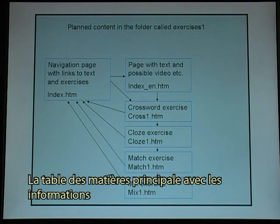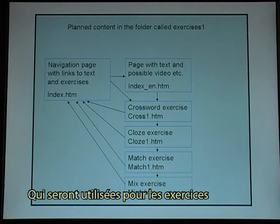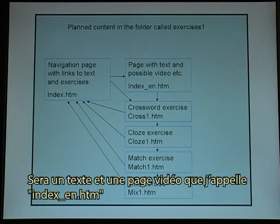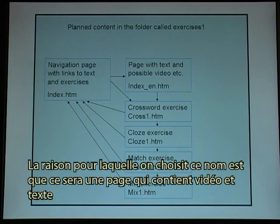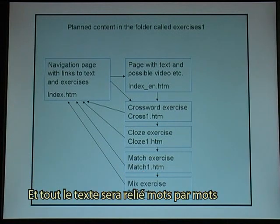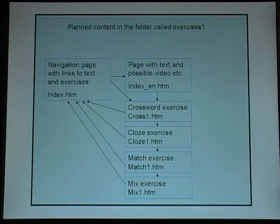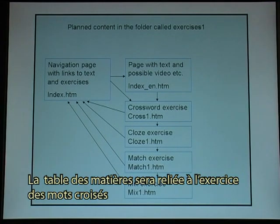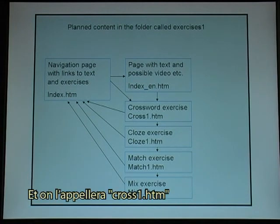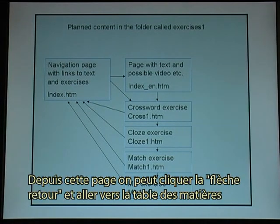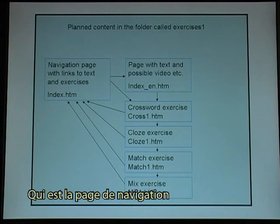The main content page with the information that will be used for exercises will be a text and video page named index_en.htm. The reason for that name is that it will be a page that holds video and text, and all the text will word by word be linked to an English-English online dictionary. The content page will then link to a crossword exercise named cross1.htm. From that page one can press the back arrow and go back to the content page, or go to the navigation page.